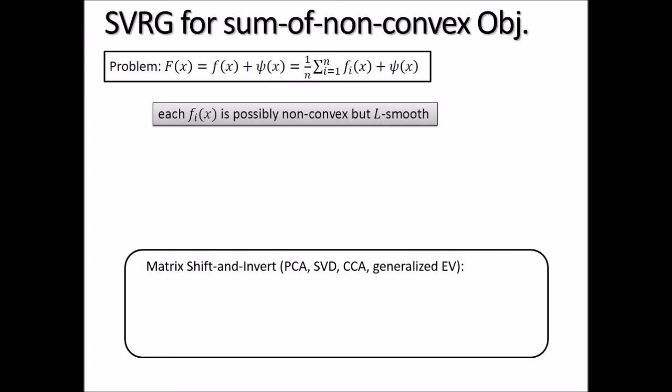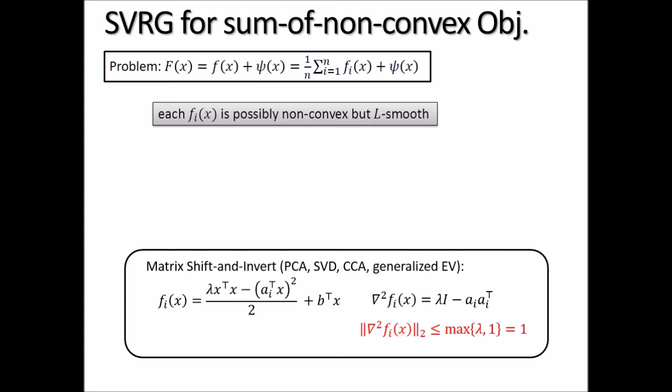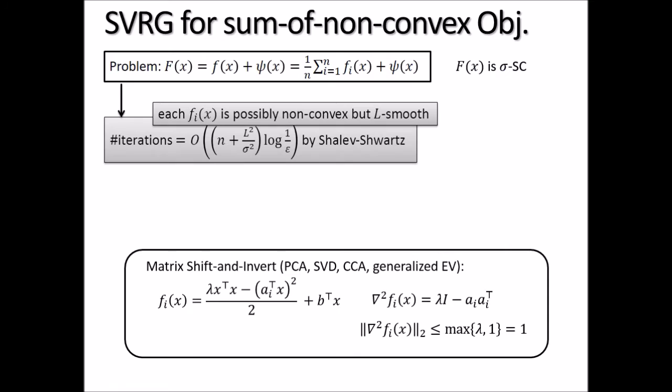If you compute the Hessian, all eigenvalues have absolute values bounded by one, so fi is 1-smooth but non-convex. Assuming the overall function is strongly convex, the prior work by Shalev-Shwartz proved that using the same SVRG method with no change, you get a certain convergence rate — the number of iterations for SVRG to converge to the minimizer, with condition numbers appearing in the bound.